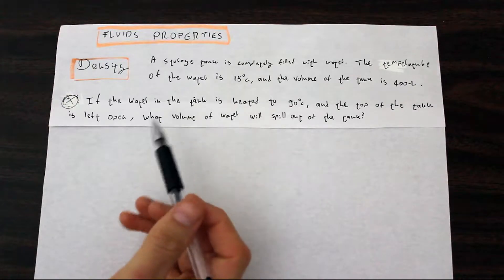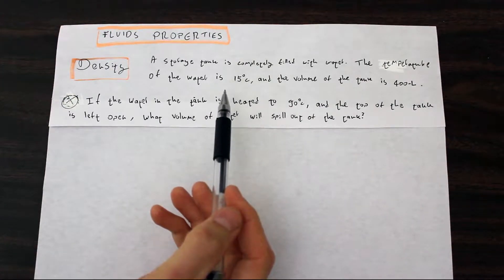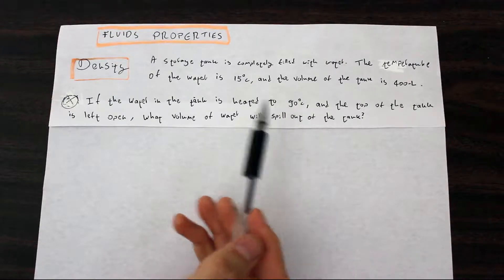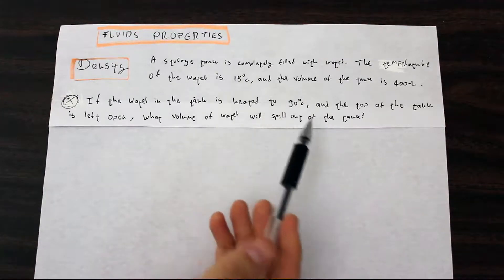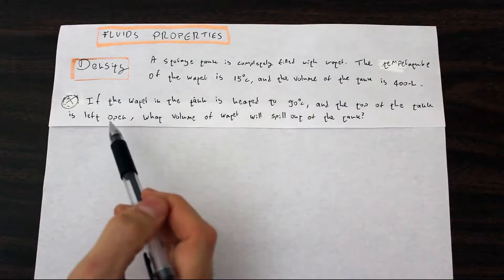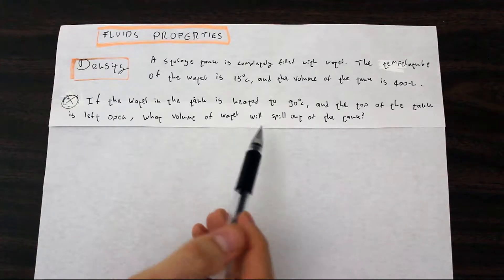So a storage tank is completely filled with water. The temperature of the water is 15 degrees Celsius and the volume of the tank is 400 liters. If the water in the tank is heated to 90 degrees Celsius and the top of the tank is left open, what volume of water will spill out of the tank?